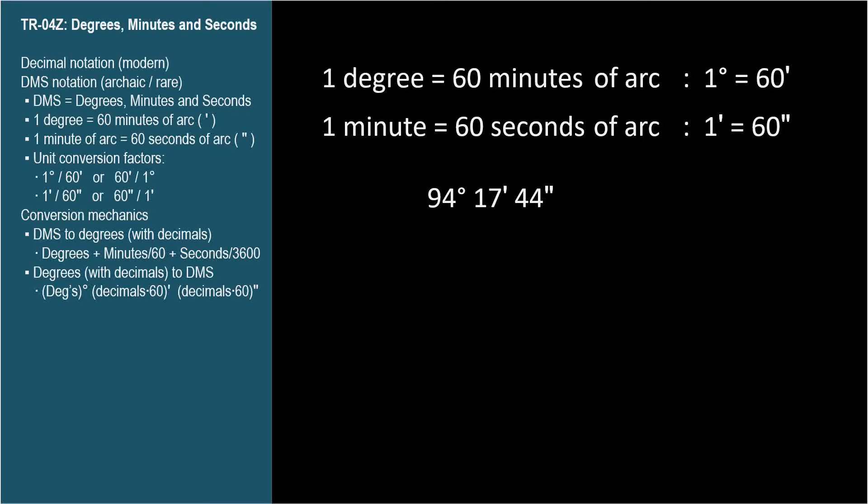Let's convert this angle measurement to decimal form. The whole degrees portion is simple because it doesn't require any conversion. So, our answer is going to be 94 point something degrees. We add the number of minutes divided by 60, since there are 60 minutes in a degree.